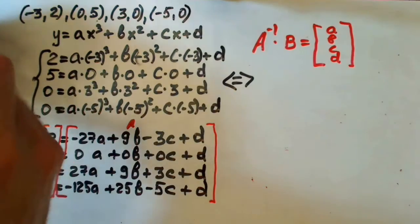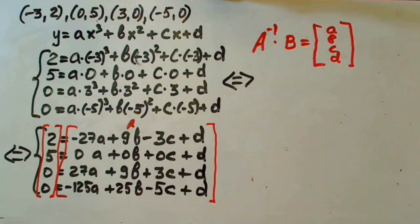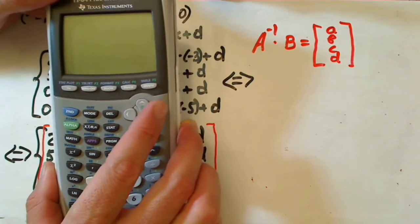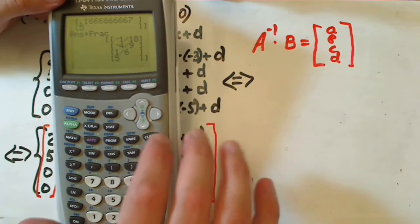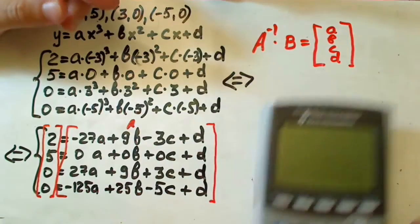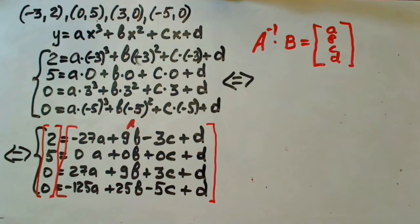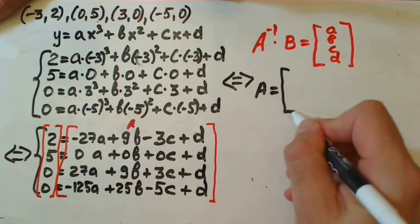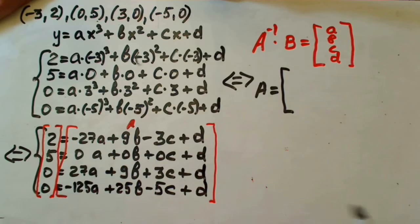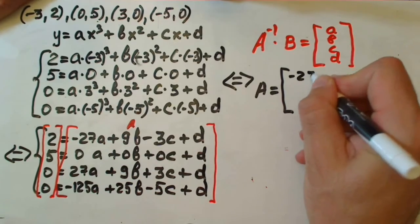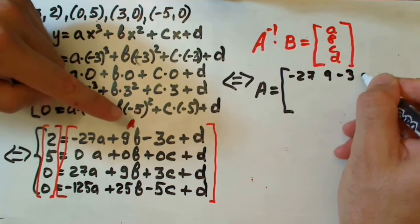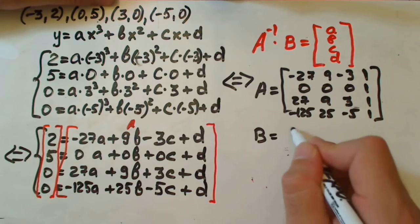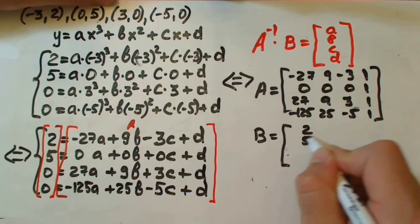We're going to use a calculator to find the inverse matrix because doing it by hand takes too long. Matrix A is just our coefficients: negative 27, 9, negative 3, 1 — and so on following the same pattern. Matrix B equals 2, 5, 0, 0.